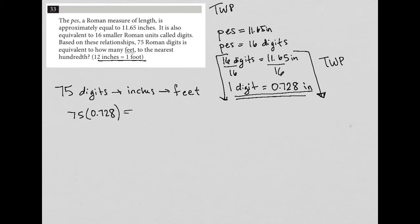And when I do that in my calculator, let's type that in, 75 times 0.728, I get 54.6 inches.